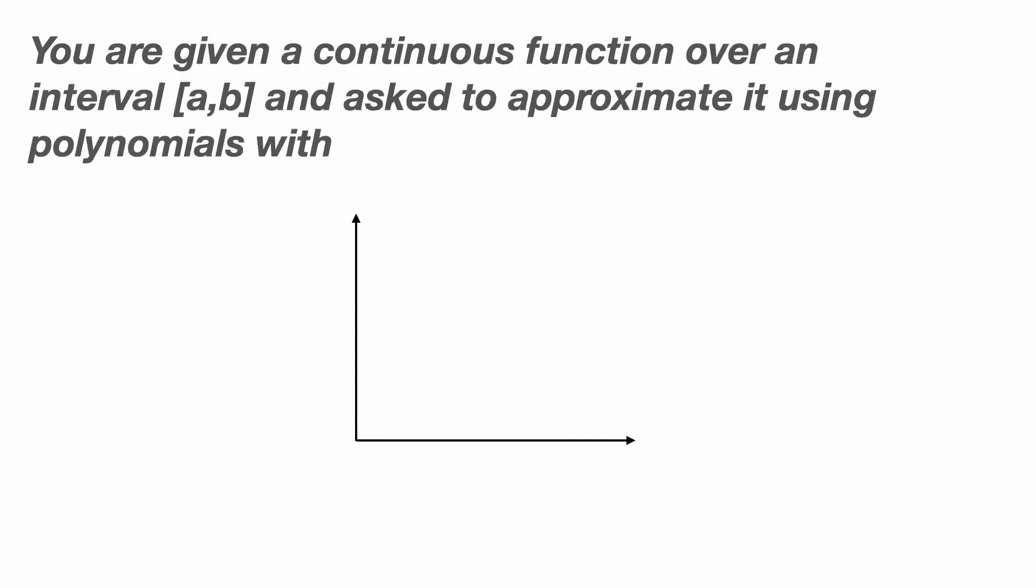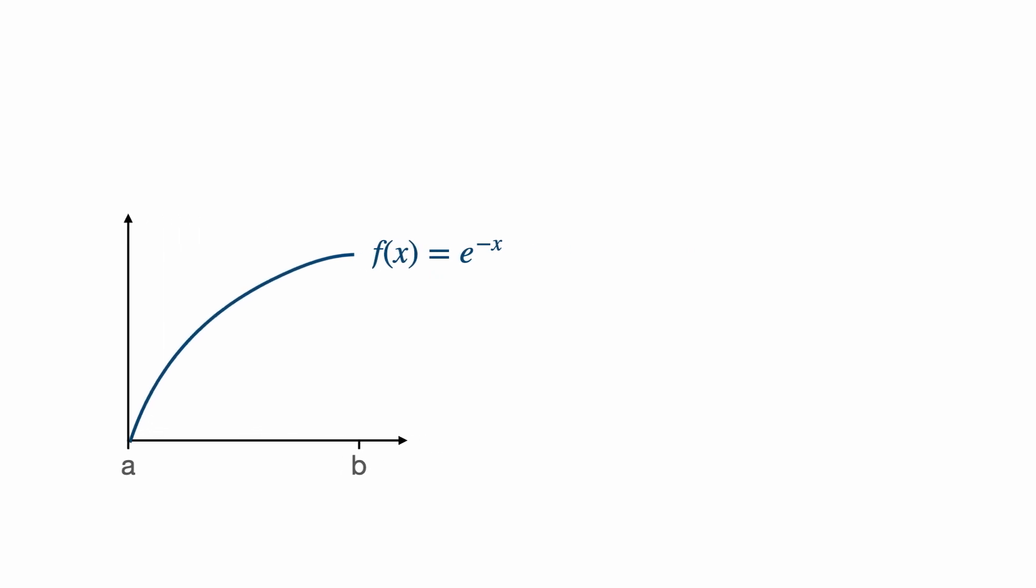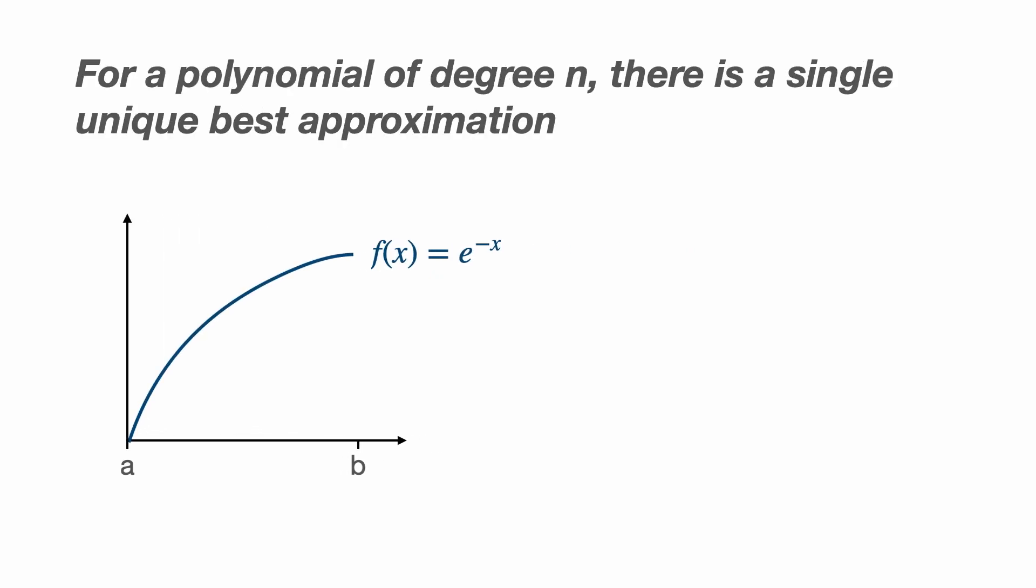You're given a continuous function F over an interval from A to B and asked to approximate it using polynomials with the L2 norm. In a previous video we showed that polynomials up to degree n form a convex set. We also know that the L2 norm is strictly convex and so the theorem applies here. What the theorem implies is that for the set of polynomials of a given degree n there will be one and only one polynomial that best approximates our function.